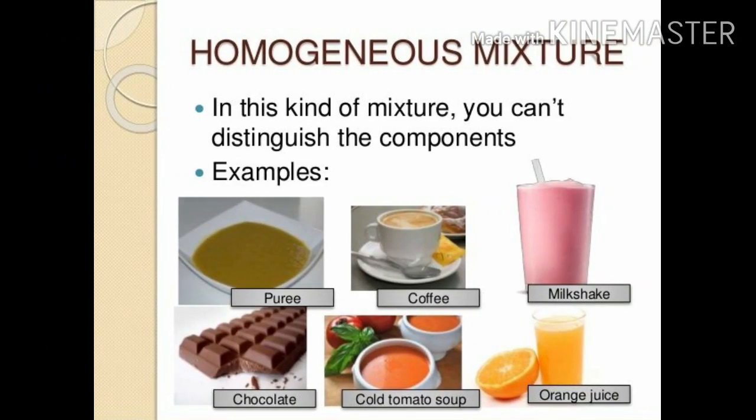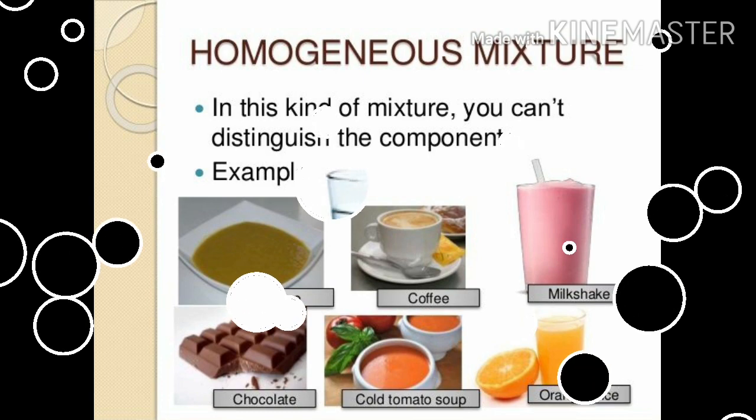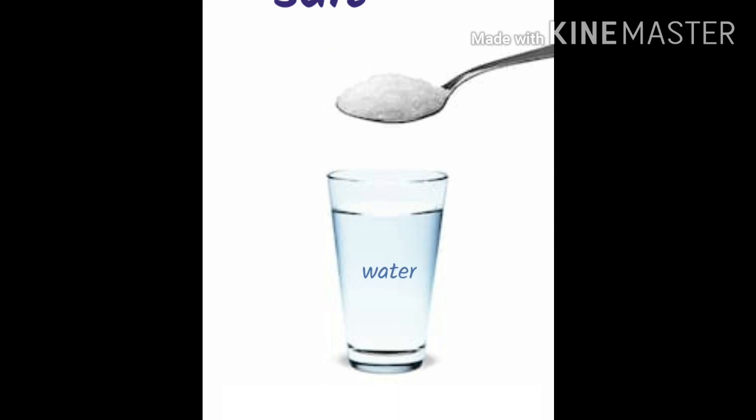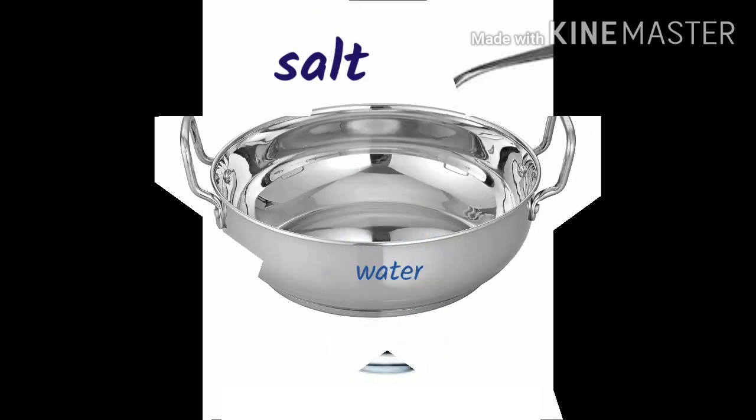Other examples of homogeneous mixtures are salt dissolved in water and alloys such as steel, bronze, and copper.